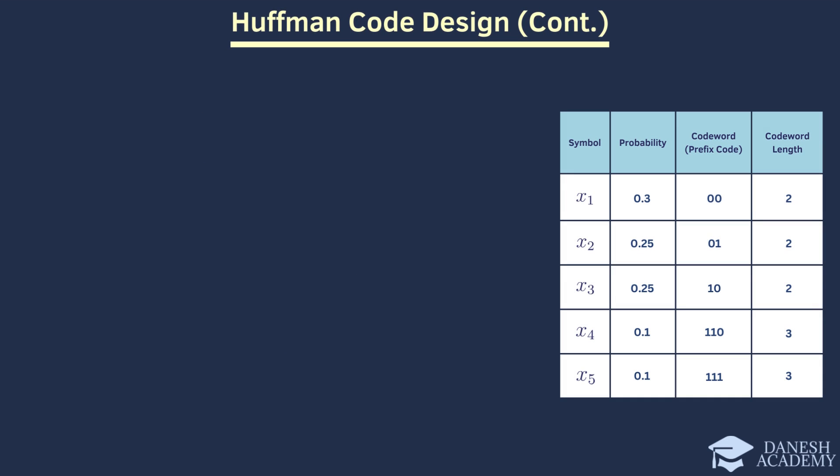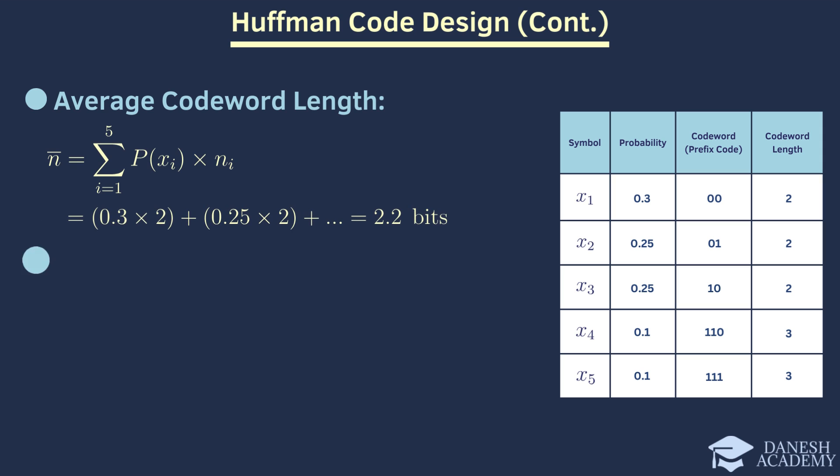After designing the Huffman code, we can create the corresponding table. This table contains symbols, probabilities, codewords, and their lengths. With this information, we can calculate the average codeword length and entropy. The average codeword length is determined by the following summation formula, which is calculated using the provided values. Similarly, entropy can be calculated using the following summation formula. As you can see, when the average codeword length is higher than entropy, it indicates that the code might still be optimal, but it's less common. Remember, the closer the average codeword length gets to the entropy, the more optimal the code becomes.